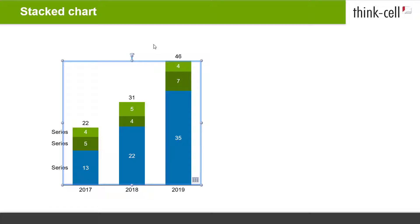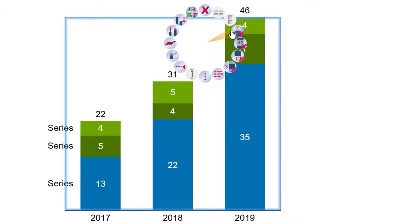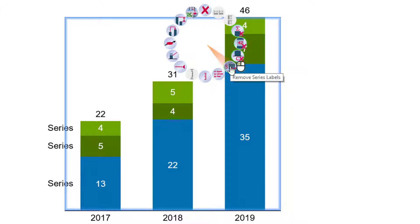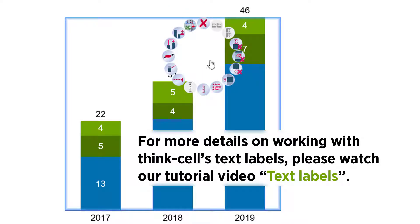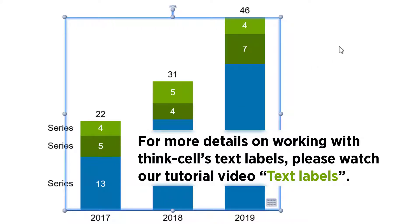By default, a newly inserted stacked chart comes with Category, Series, Segment, and Total Labels. If you would like to change which label types are displayed, right-click onto the chart and choose the label options from the context menu. For more details on working with ThinkCell's text labels, please watch our tutorial video on Text Labels.